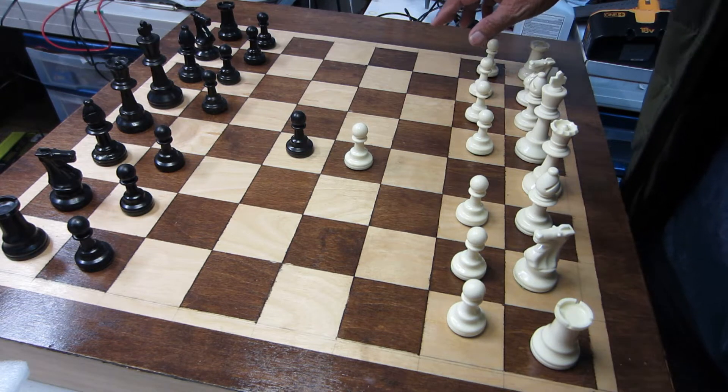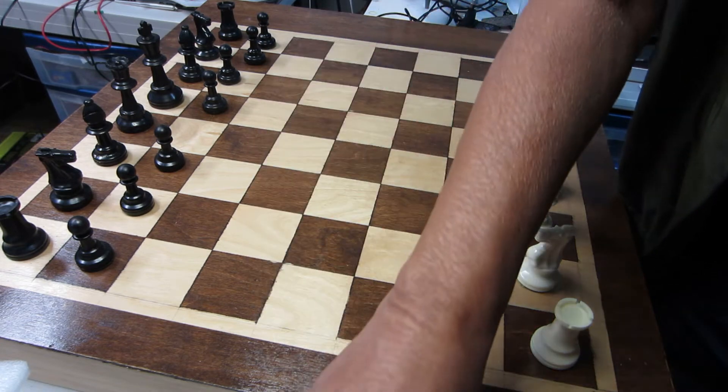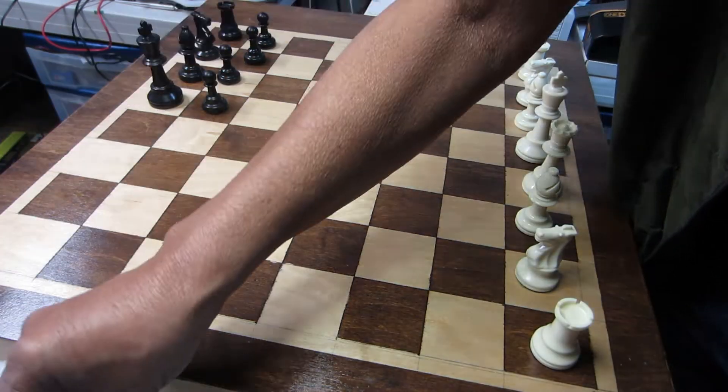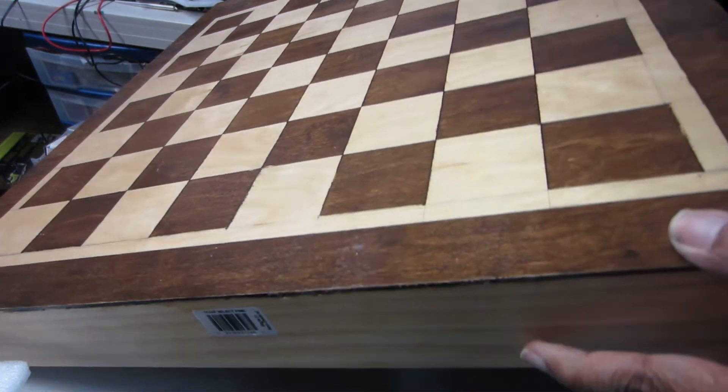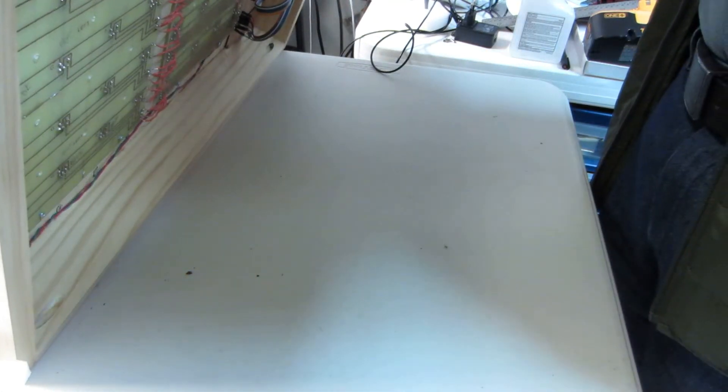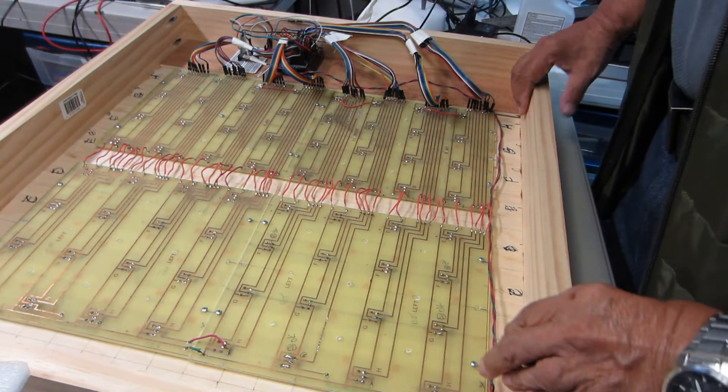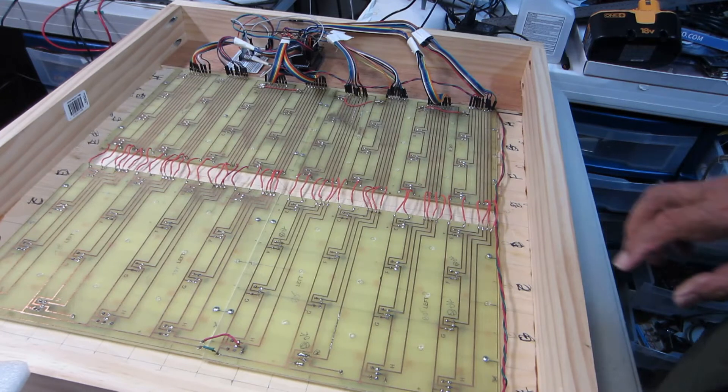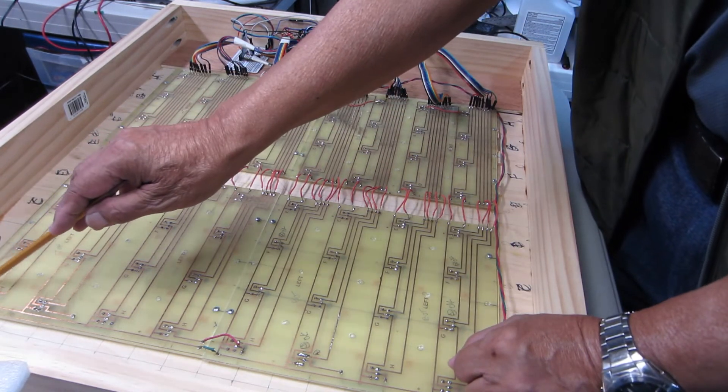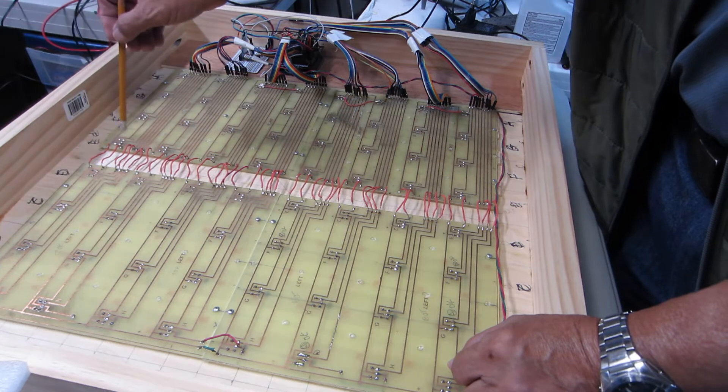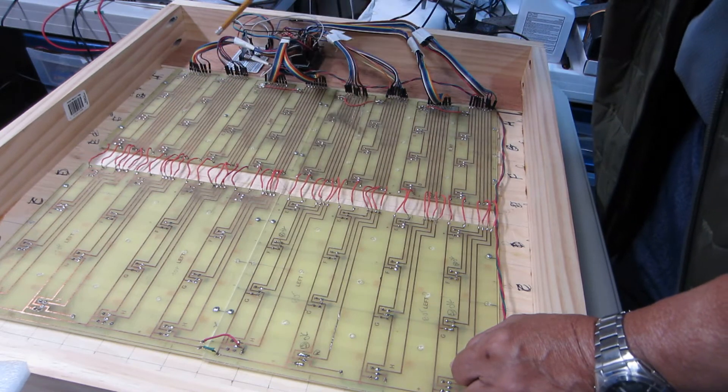Now let me show you the inside of this system. Let me pull this out. Okay, now you can see that each of these squares gets a Hall effect unit underneath, and this is wired and connected to the Mayhawk Centipede.